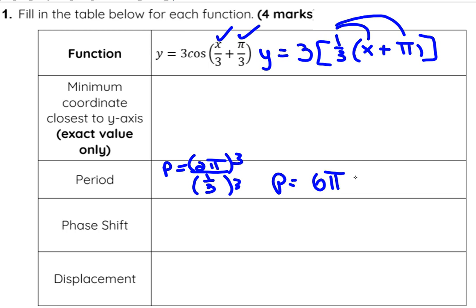Phase shift is your horizontal translation. The phase shift is actually π units to the left. And your vertical displacement is your d value, but there is none, nothing added on the outside.